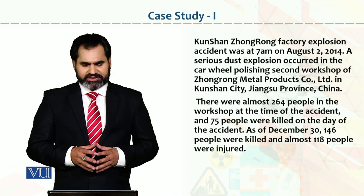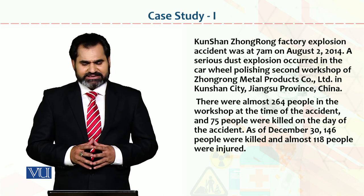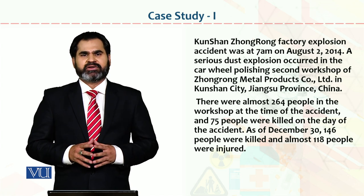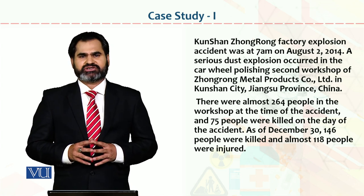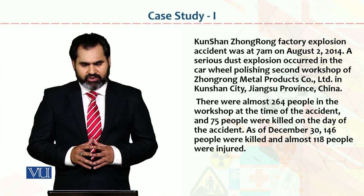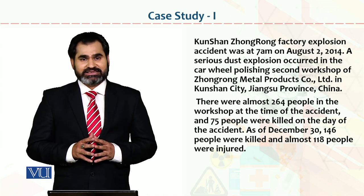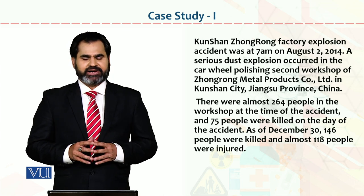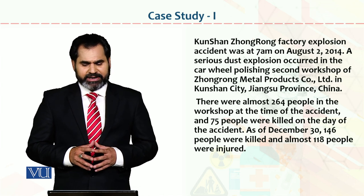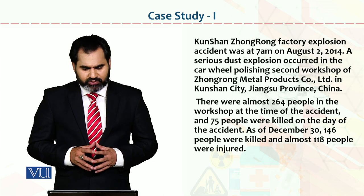We would like to start with the Kunsheng Zhonglong factory explosion. The accident occurred at 7 a.m. on 2nd August 2014. This organization, Zhonglong Metal Products Company Limited, experienced a serious dust explosion in the car wheels polishing second workshop, located in Kunsheng City, Jiangsu Province, China.